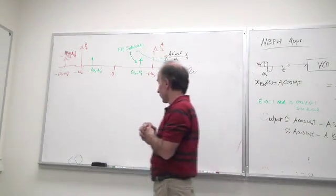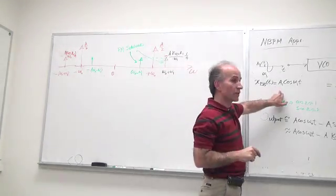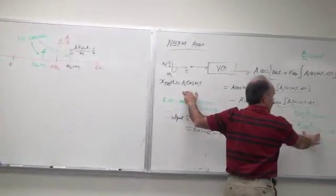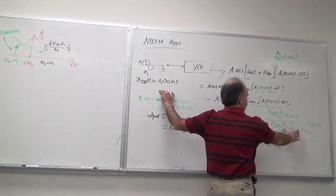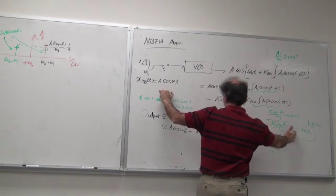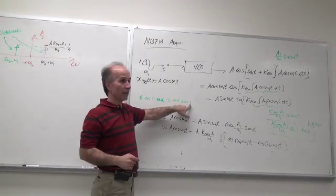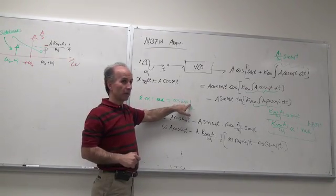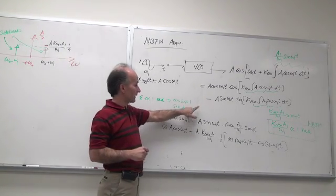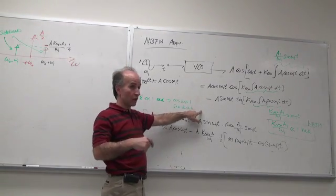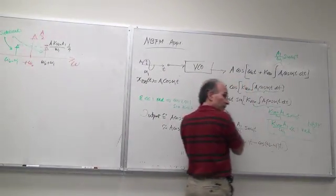Okay, now in homework number two you will take this one step further. You will have the same situation except that this condition doesn't hold. So we're not assuming much less than one here - this is somewhat small. What you will do is instead of writing cosine of epsilon as one, you will expand it for the next Taylor series term. Similarly here for the next Taylor series term. That allows you a much better approximation, so even if this is as high as one that's a pretty good approximation.